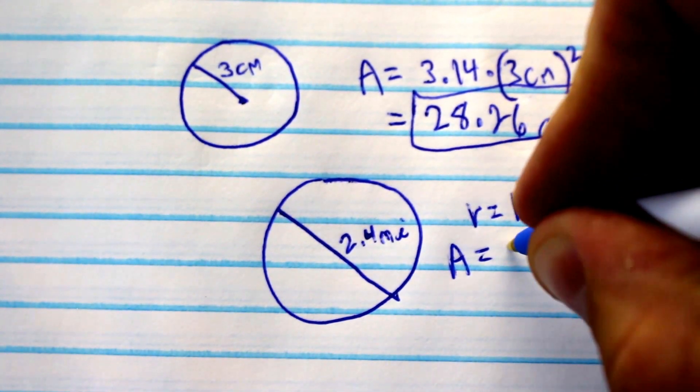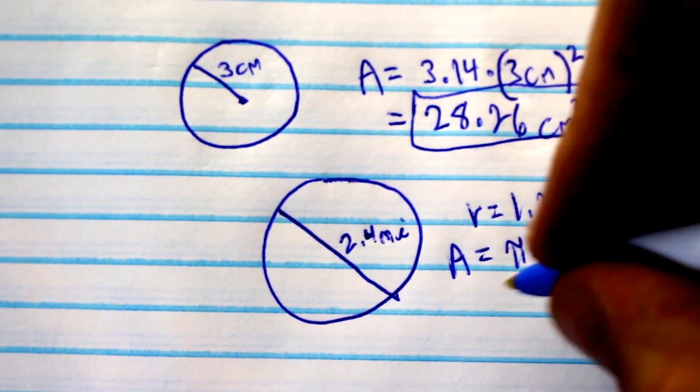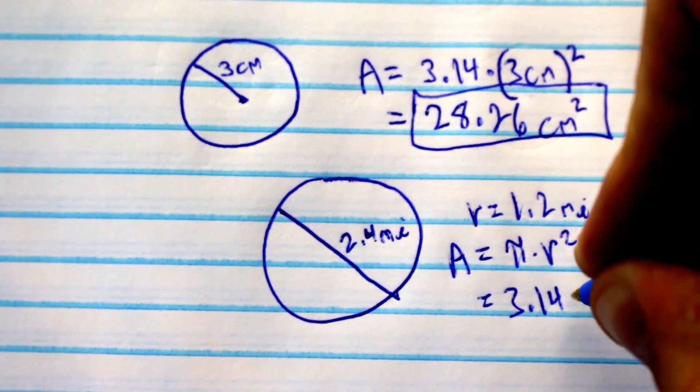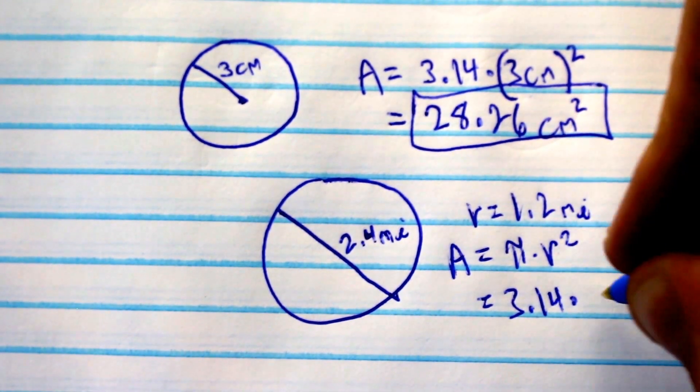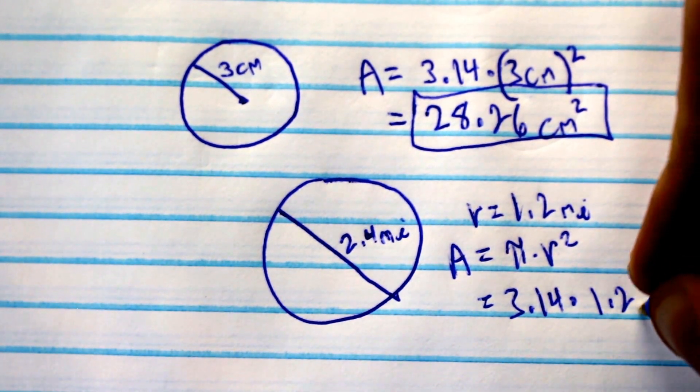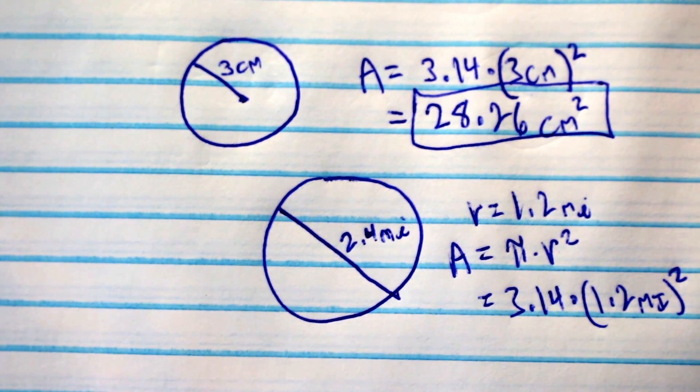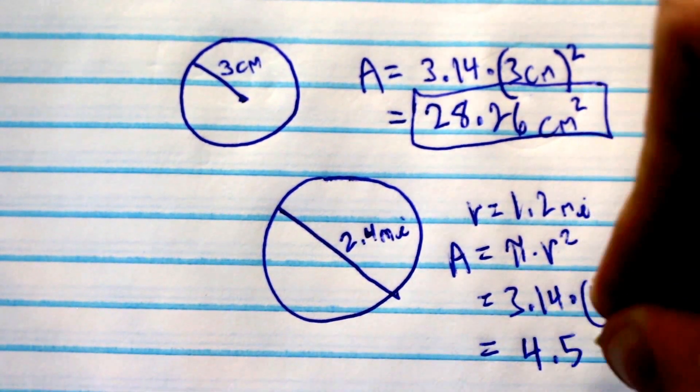Area equals pi times r squared, which in this case equals 3.14 times our radius of 1.2 miles squared, which gives you 4.52.